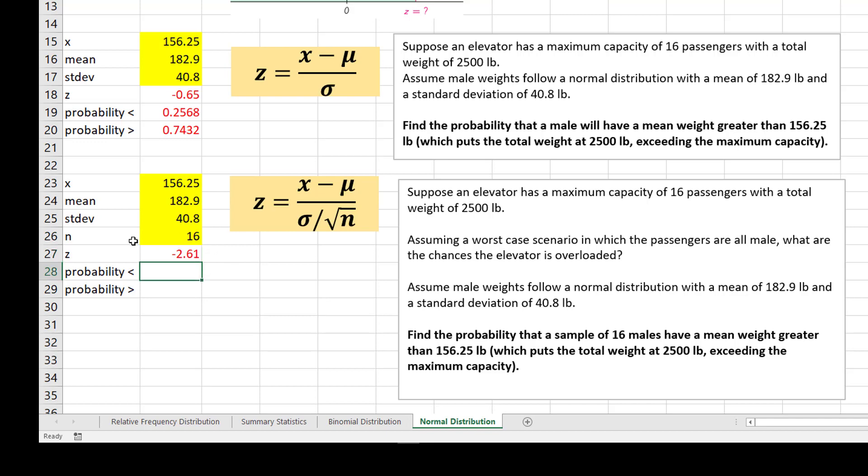As you can see, this makes certainly a much bigger difference in my Z value. Once again, I will use my NORM.S.DIST, my Z, and I do want this to be cumulative.